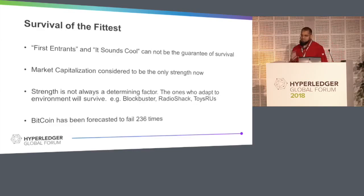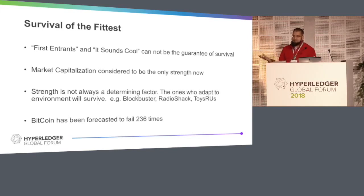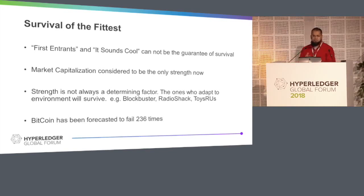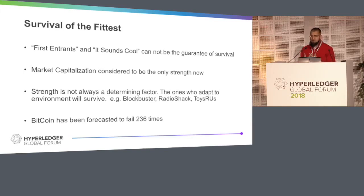When we talk about survival of the fittest and blockchain, one problem I have is people say that being first in trend guarantees survival. That idea sounds cool, but first-mover advantage cannot guarantee survival. Right now, whenever we talk about cryptocurrencies, the only thing we consider is market capitalization — Bitcoin versus Ethereum versus Monero, Dash, and everything else. Strength is not always the determining factor for survival; sometimes it works against you. Examples like Blockbusters, Toys R Us, and Radio Shack — they were giants who could not adapt to the environment and vanished.